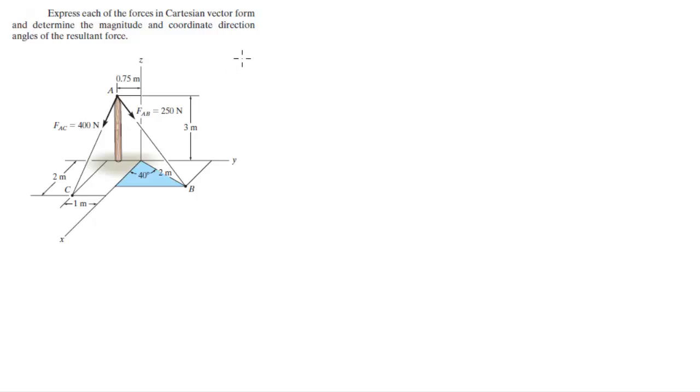So the first thing I like to do is find the position vectors. Position vector A is equal to 0i minus 0.75j plus 3k.